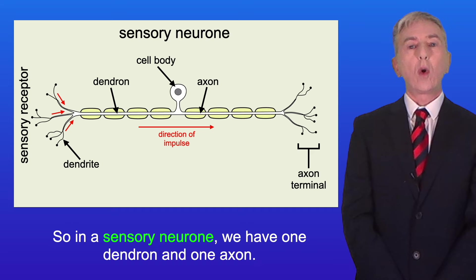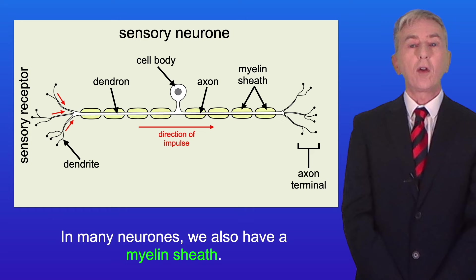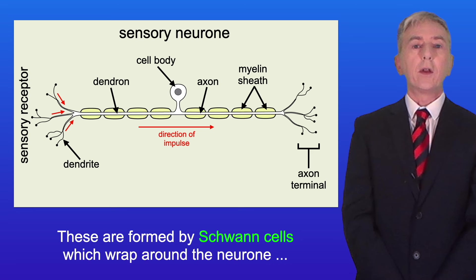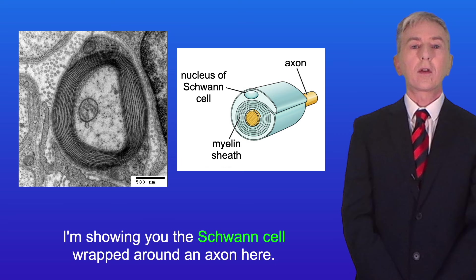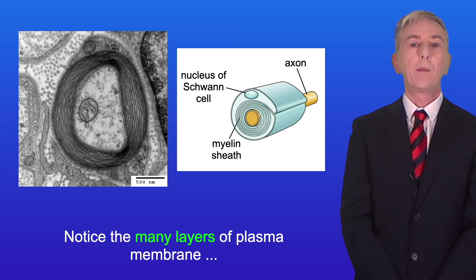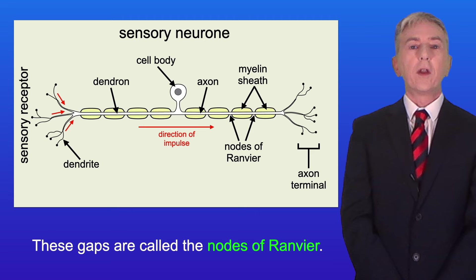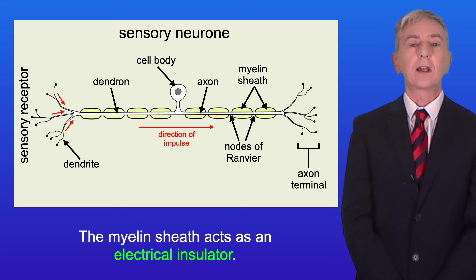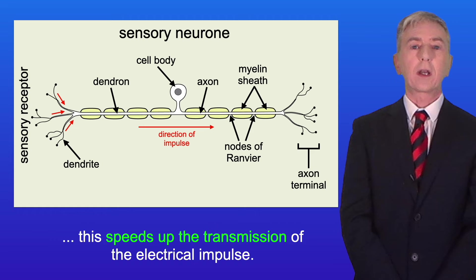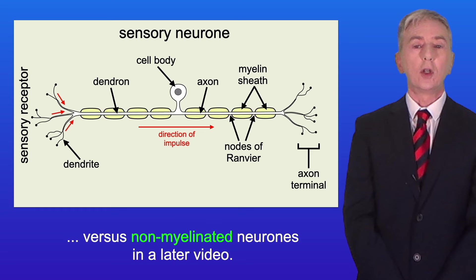In many neurons we also have a myelin sheath. These are formed by Schwann cells which wrap around the neuron forming many layers of plasma membrane. Notice the many layers of plasma membrane forming the myelin sheath around the axon. We also have gaps in between the Schwann cells where there's no myelin — these gaps are called the nodes of Ranvier. The myelin sheath acts as an electrical insulator, and together with the nodes of Ranvier this speeds up the transmission of the electrical impulse. We'll be comparing myelinated versus non-myelinated neurons in a later video.